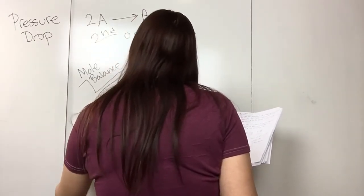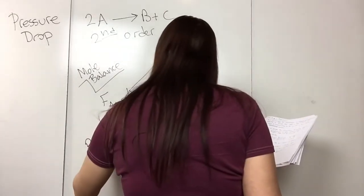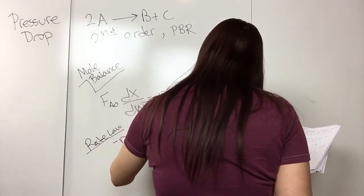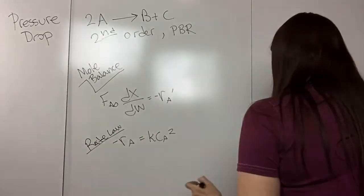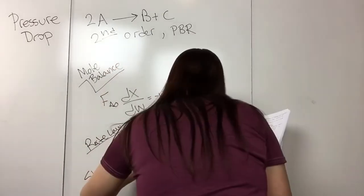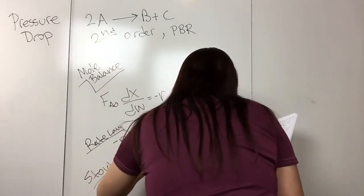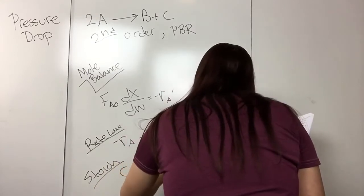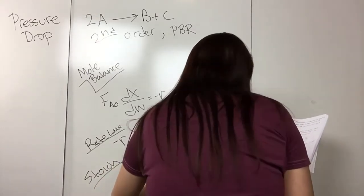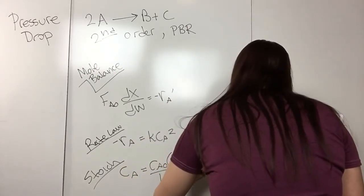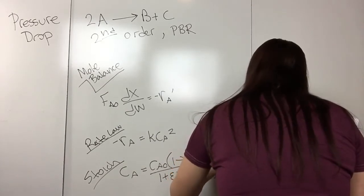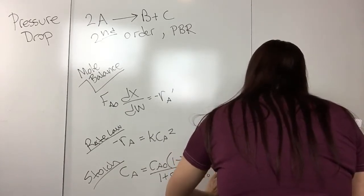Then the next thing we do is write the rate law. We know it's second order, so the rate is k·C_A². And then we can do the stoichiometry: C_A = C_A0 · (1 − X)/(1 + εX) · (P/P₀) · (T₀/T).